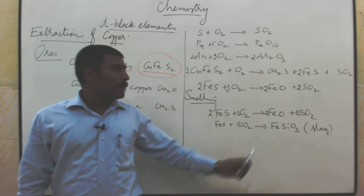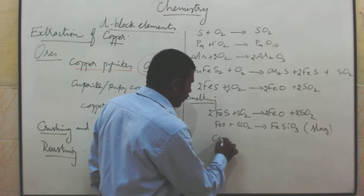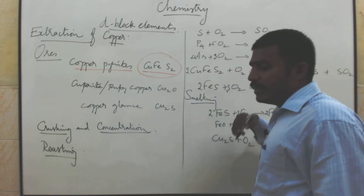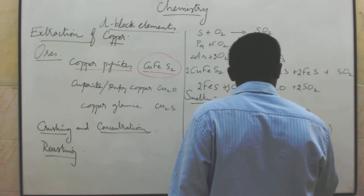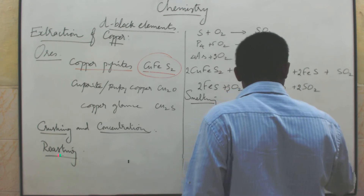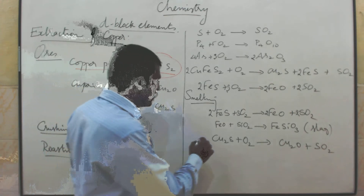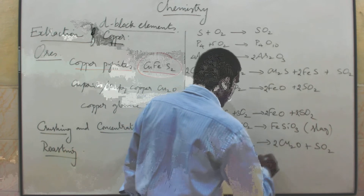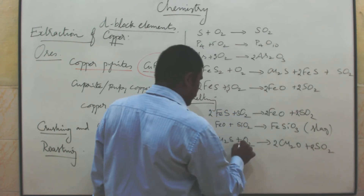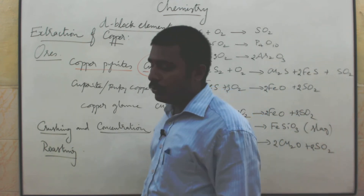Copper becomes copper sulphide. Copper sulphide reacts with air to give copper oxide Cu₂O plus SO₂. To balance: 2 copper, 2 copper; 1 sulphur, 1 sulphur; 3 oxygen but only 1 oxygen here. So, multiply by 2 — 4 copper, 2 sulphur, 6 oxygen — so put 3. Cu₂S becomes Cu₂O.